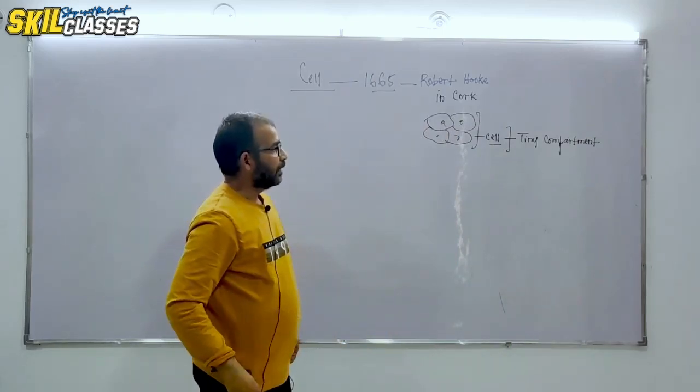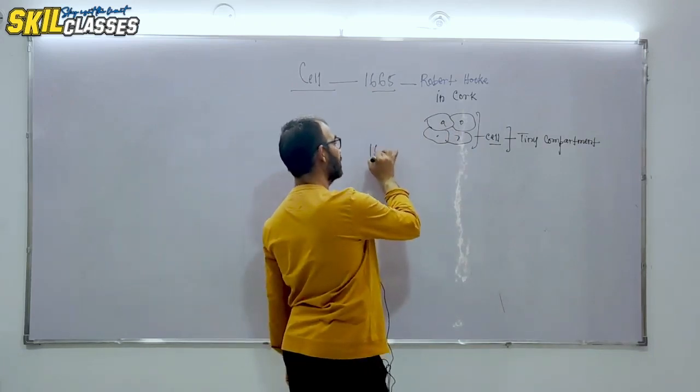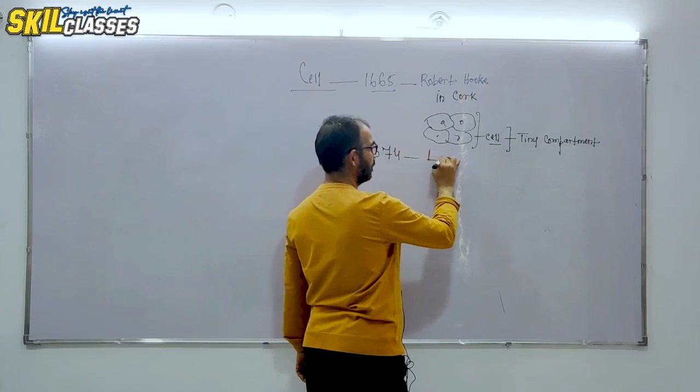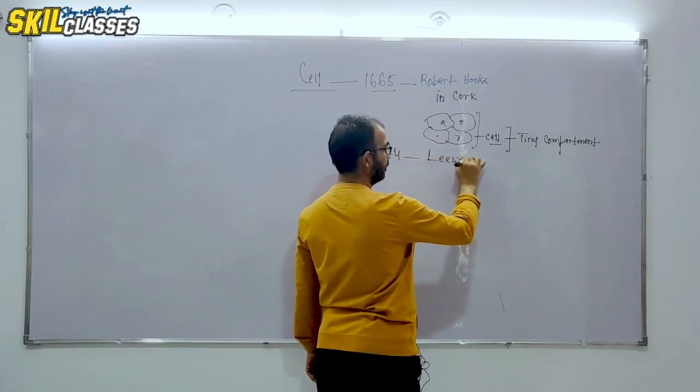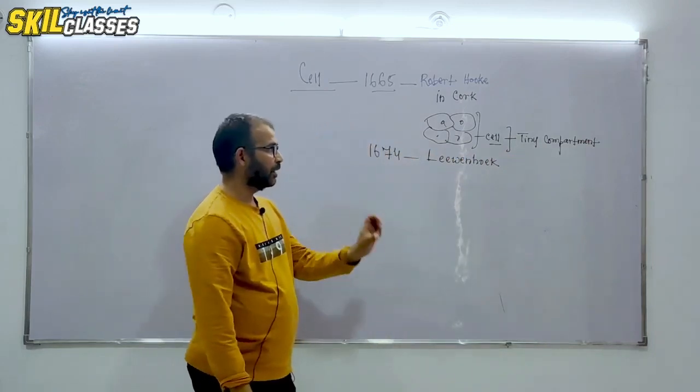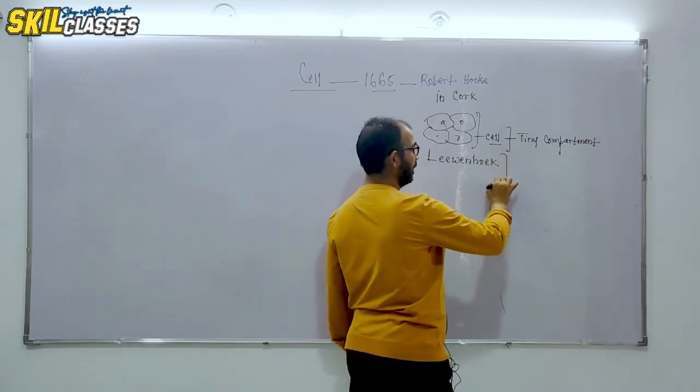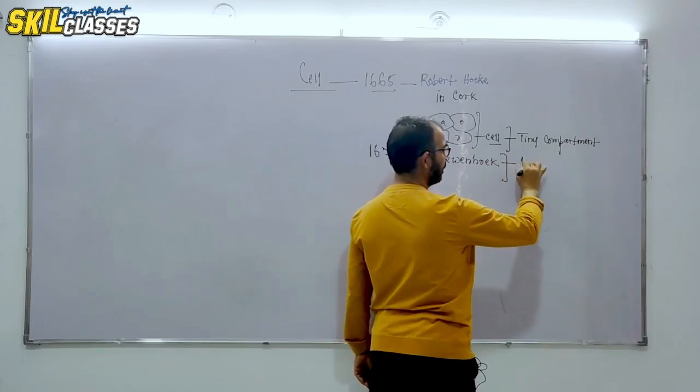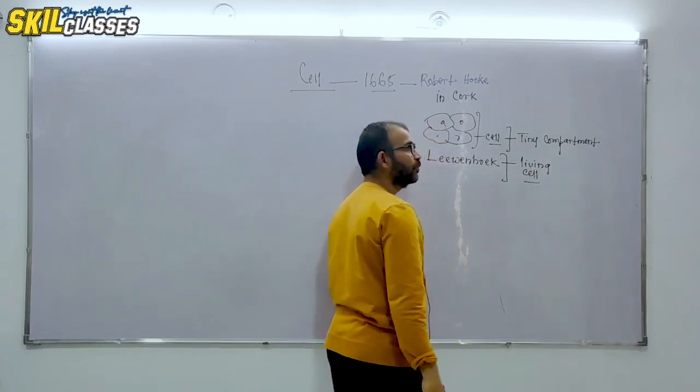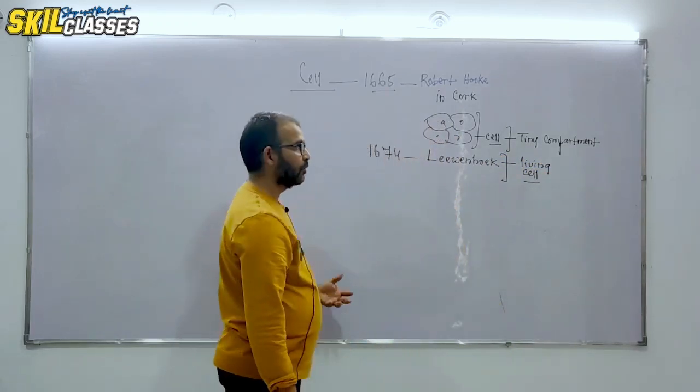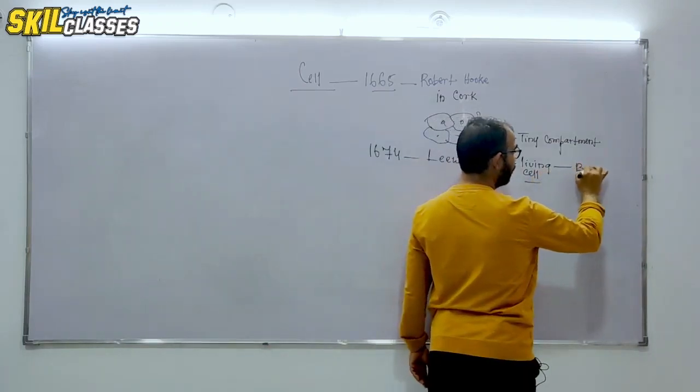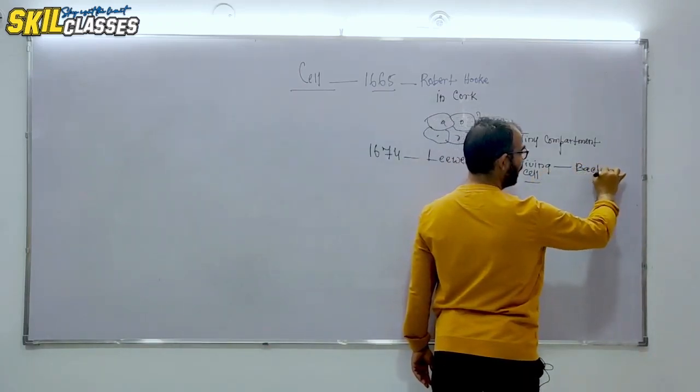Later, Leeuwenhoek, a scientist in 1674, discovered living cells through his microscope.